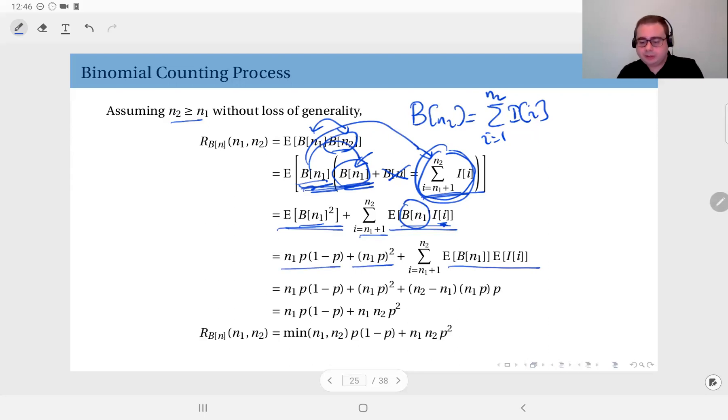And this part, I can write this as the mean of b of n1 times the mean of this Bernoulli trial, which is p. And this is n1 times p.